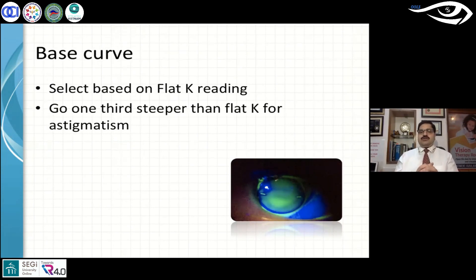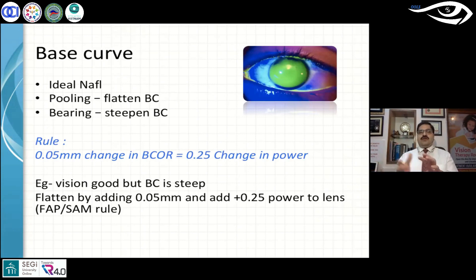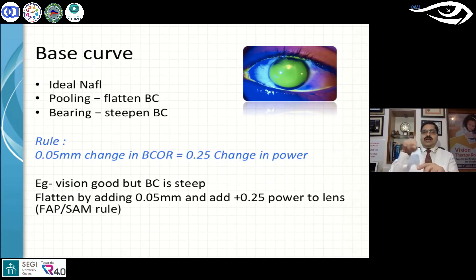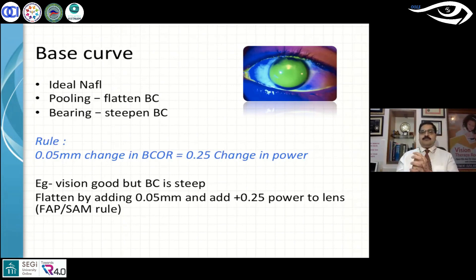The bottom picture shows a toric scleral contact lens fitting attempt. First, assess the base curve — the central fit of the lens — then move toward the periphery. The ideal fluorescein pattern differs by lens type: for a corneal RGP you want an alignment fit; for ortho-K you need a bull's-eye pattern; for a scleral lens you need vaulting of about 200–250 microns. If there is too much pooling in the center, flatten the base curve; if there is too much bearing in the center, steepen the base curve. Pooling means excess fluorescein in the center; bearing is a dark area with no fluorescein.